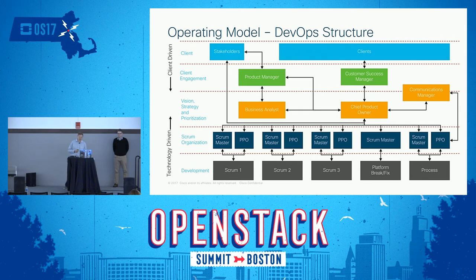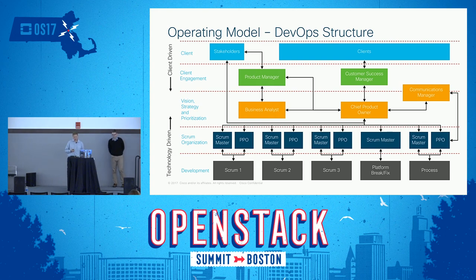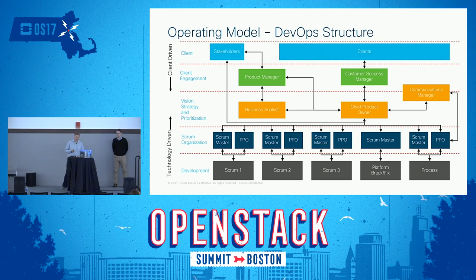We also have a process scrum focused on keeping our processes up to date and ensuring documentation — whether end-user facing or internal — gets done and doesn't get left behind. We have scrum masters for ceremonies and a proxy product owner for each scrum. We don't want to hold back a scrum while they wait for prioritization. Someone in that team knows the priorities, makes sure user stories are created and prioritized, and can accept completed work.